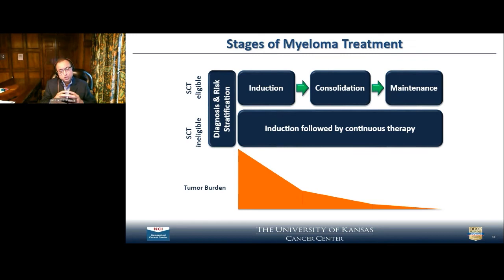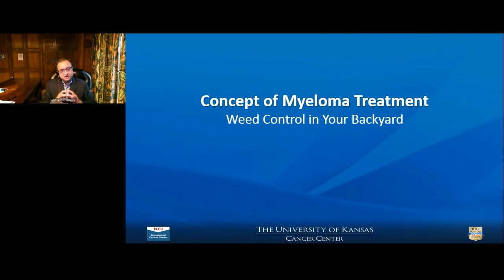When diagnosed with multiple myeloma, it is an ongoing therapy unless we're promising a cure. Our promise is: deeper the remission, longer the remission lasts. We look at a patient and assess whether they are transplant eligible or not, and based on that we do transplantation. Initially we do induction, followed by maintenance. I always say the care of myeloma is almost like weed control in your backyard.